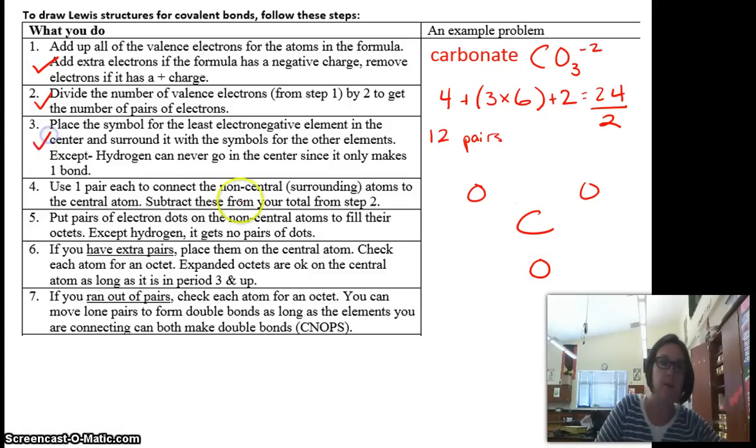Step 4. Use 1 pair each to connect the noncentral atoms to the central atom and subtract that from my total. So here's 1, 2, 3 bonds. So 12 minus 3 means I have 9 pairs left.